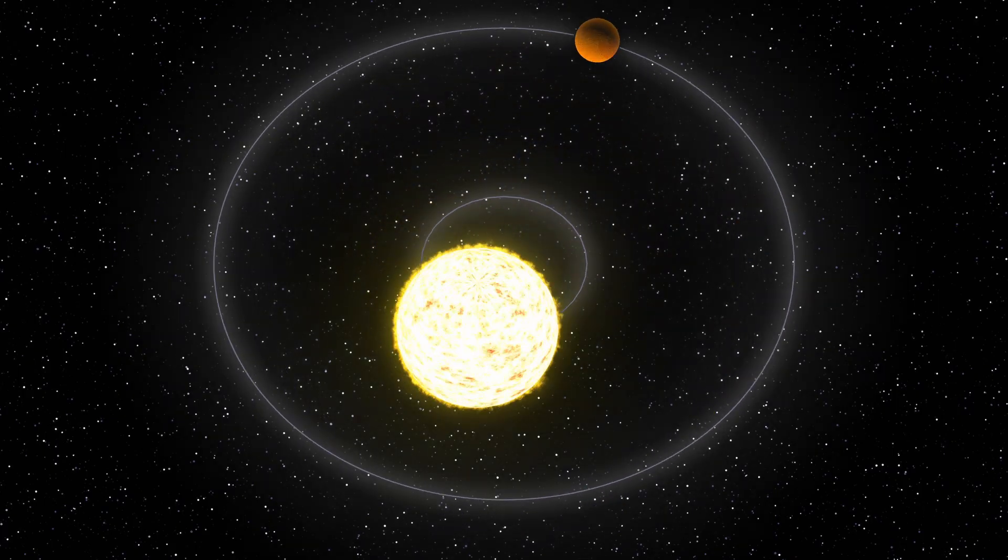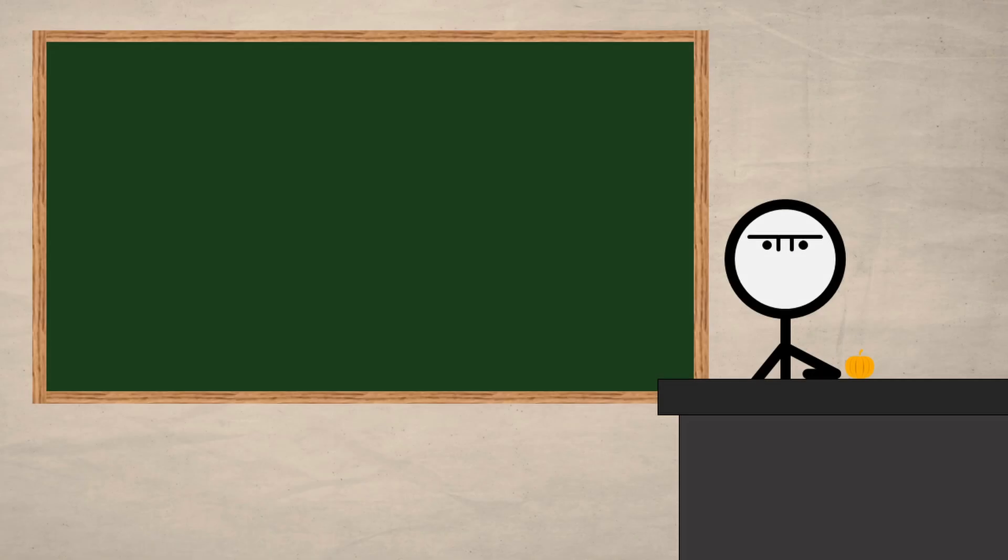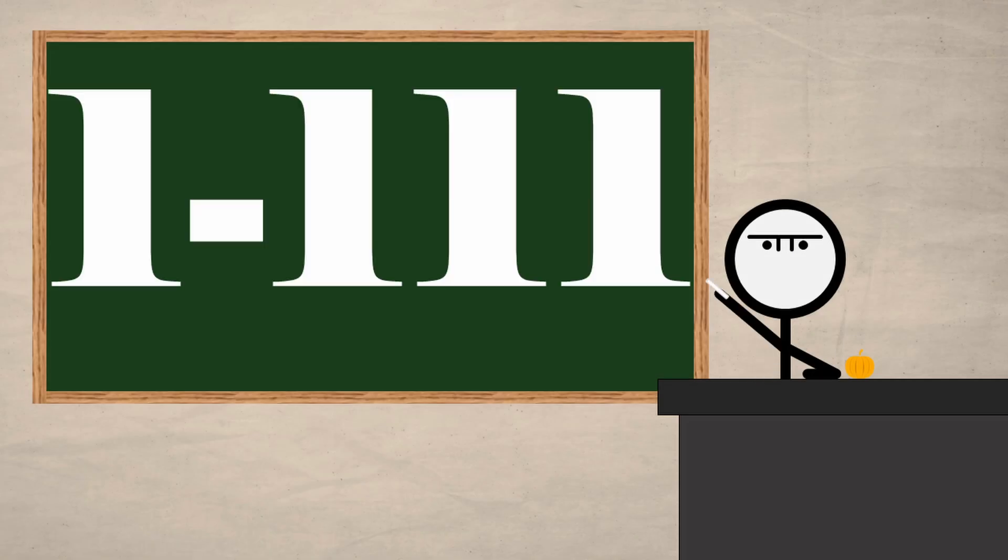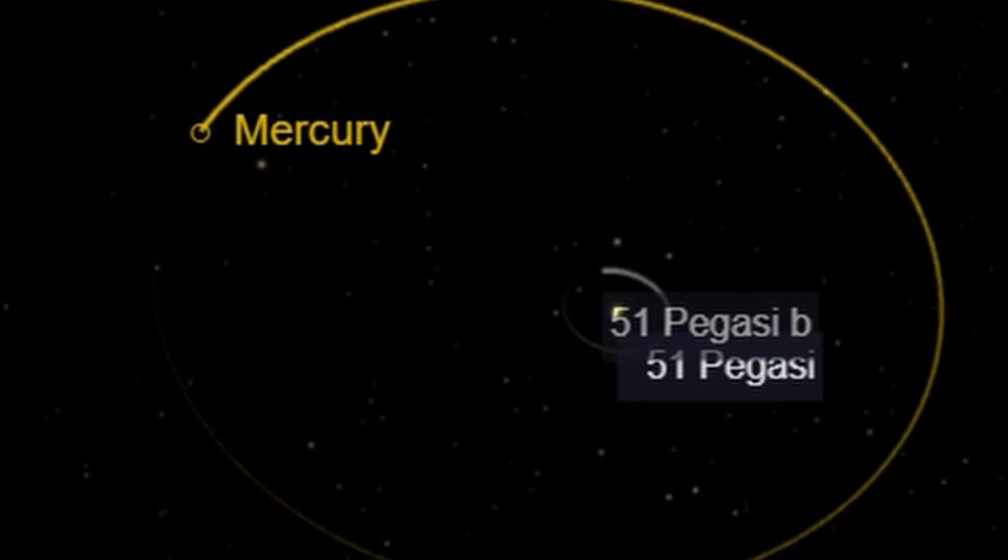These bad boys swirl around their suns with such insane speeds that they pull their stars with them as they rocket around. On space scales, this speed equates to having a year between 1 and 111 Earth days, which usually means they're skimming closer to their star than Mercury is to ours.